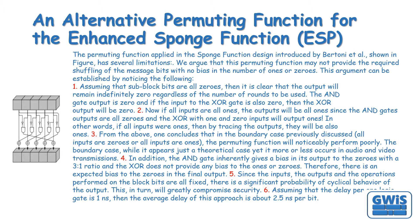In other words, if all inputs were ones, the outputs will also be ones. From the above, one concludes that in the boundary case — all inputs are zeros or all inputs are ones — the permuting function will noticeably perform poorly. The boundary case, while it appears just a theoretical case, more or less occurs in audio and video transmissions. In addition, the NOT gate inherently gives a bias in its output to zeros with a 3-to-1 ratio, and the XOR does not provide any bias to ones or zeros. Therefore, there is an expected bias to zeros in the final output. Furthermore, since the inputs, outputs, and operations performed on the block bits are all fixed, there is a significant probability of cyclical behavior of the output.